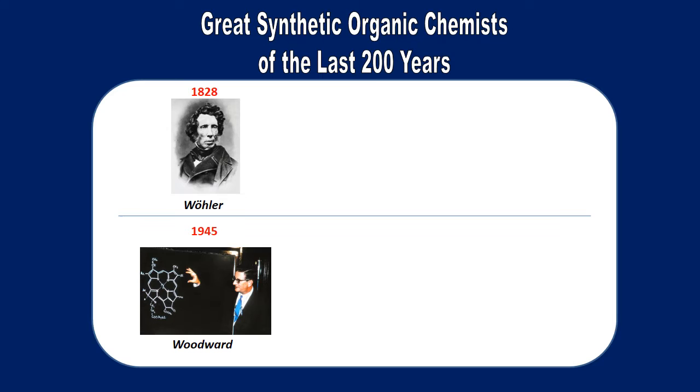Let's begin our discussion by taking a look at a few of the great synthetic organic chemists of the last 200 years including everyone's favorite the father of modern organic chemistry Friedrich Wöhler who kicked everything off in 1828 when he accidentally synthesized the organic compound urea from the inorganic material ammonium cyanate.